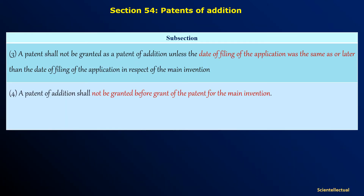Section 54 Subsection 3: a patent shall not be granted as a patent of addition unless the date of filing of the application is the same as, or later than, the date of filing of the main invention. Subsection 4 says a patent of addition shall not be granted before the grant of the patent for the main invention.